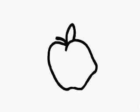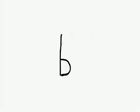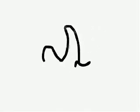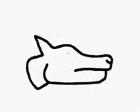A is for Apple, Ant and Aardvark. B for Banana, Beaches and Bark.